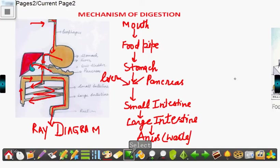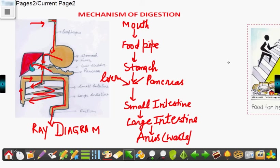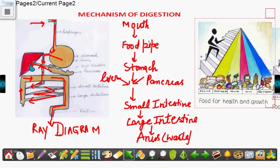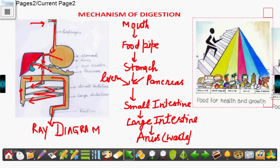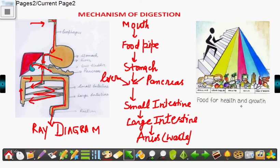Hence, the diet contained should be very healthy. You should have food for health and growth, and a balanced diet includes cereals, pulses, vegetables, fruit, milk, and more. Happy digestion!